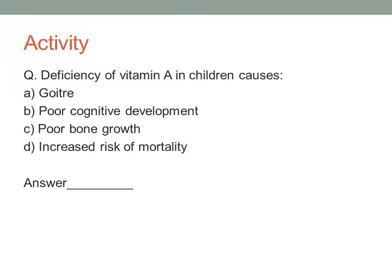Here is a question: Deficiency of vitamin A in children causes — option A: goiter, option B: poor cognitive development, option C: poor bone growth, option D: increased risk of mortality. Choose your answer or wait for the answer until the end.